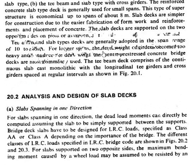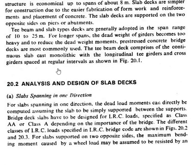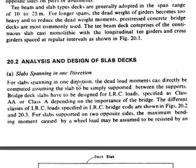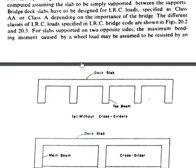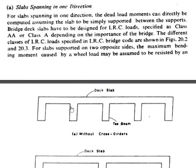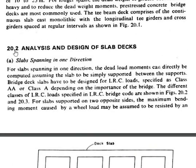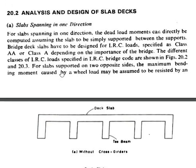The T-beam deck comprises a continuous slab cast monolithically with longitudinal T-girders and cross girders spaced at regular intervals. The T-shaped structure can be seen in the figure here — this is a T-beam. Now let us see how to analyze slab decks.